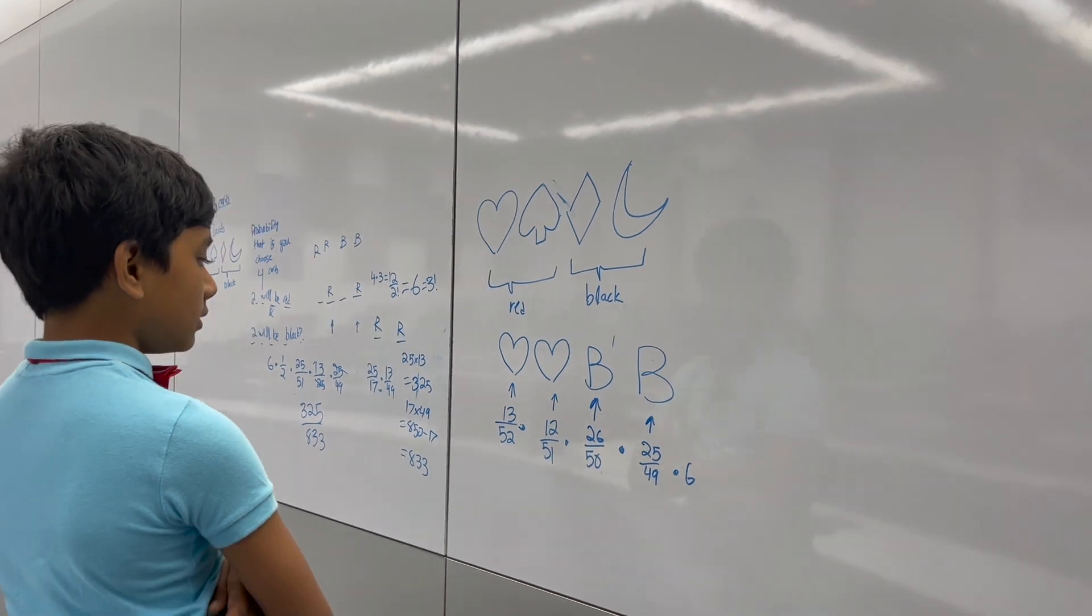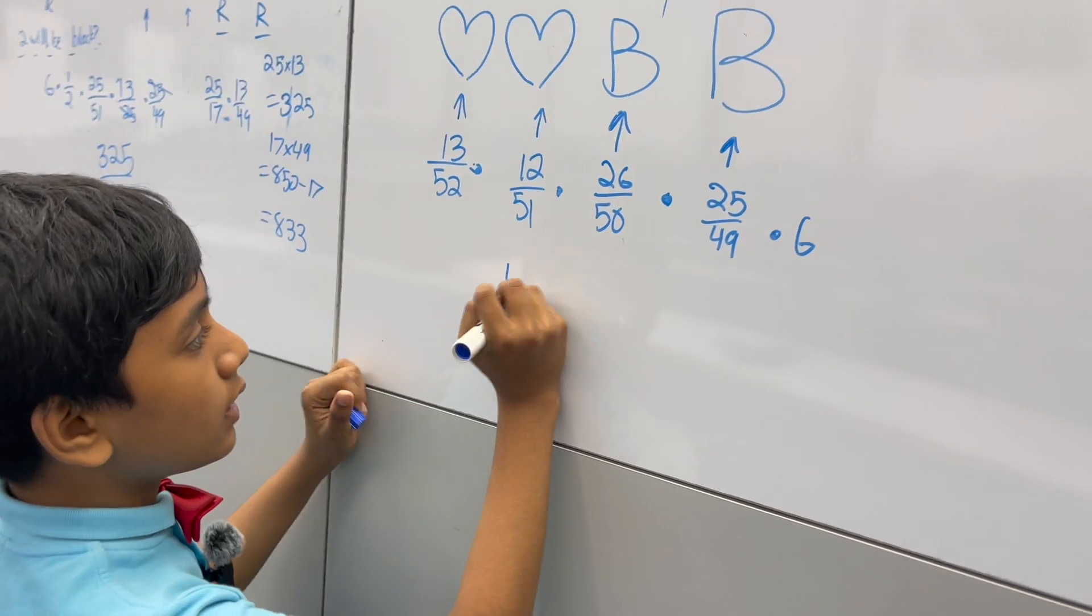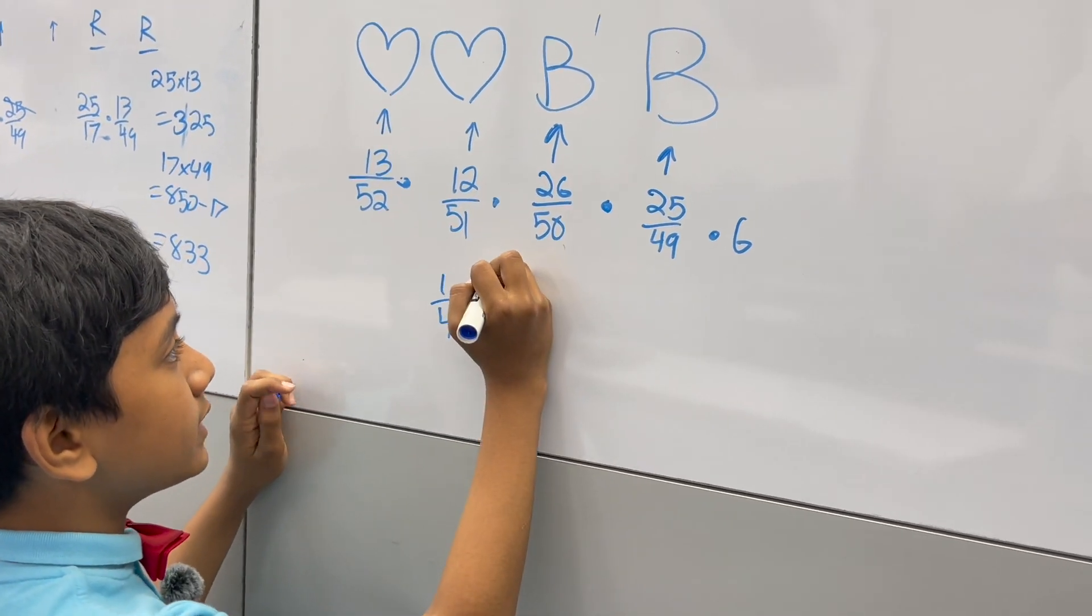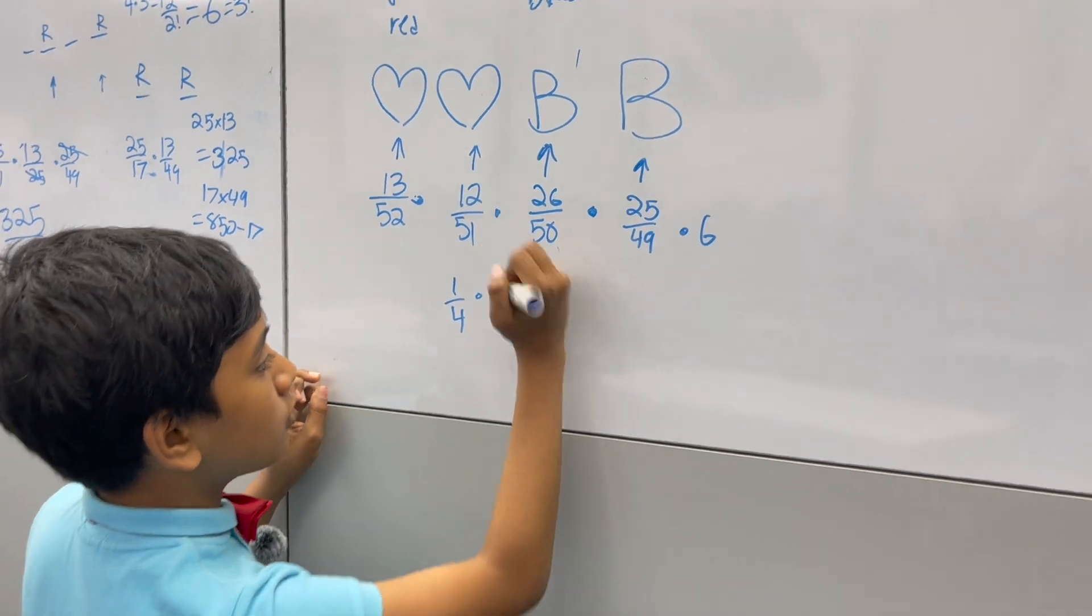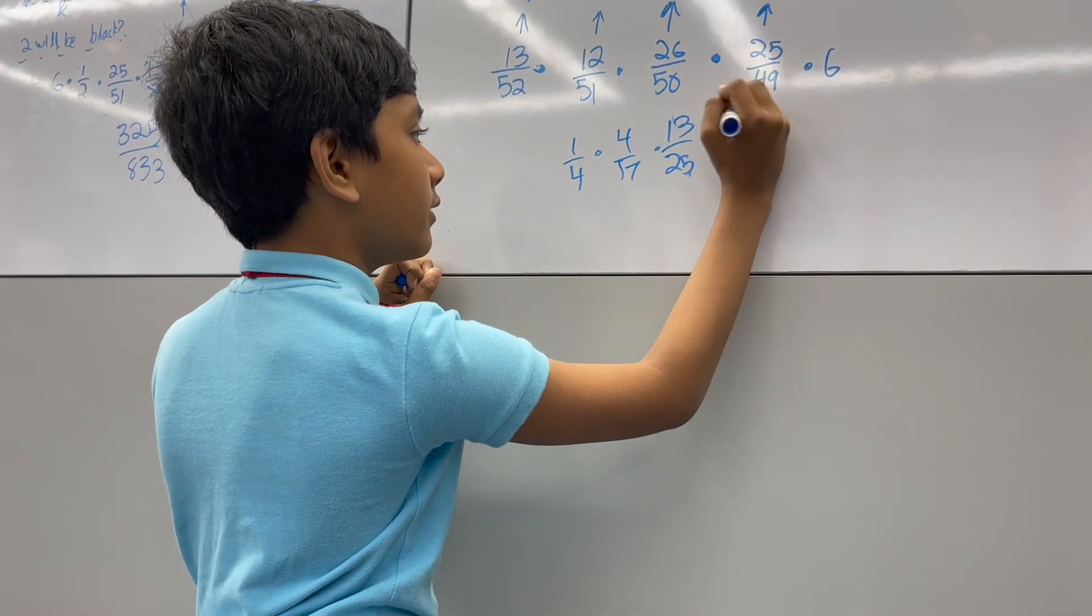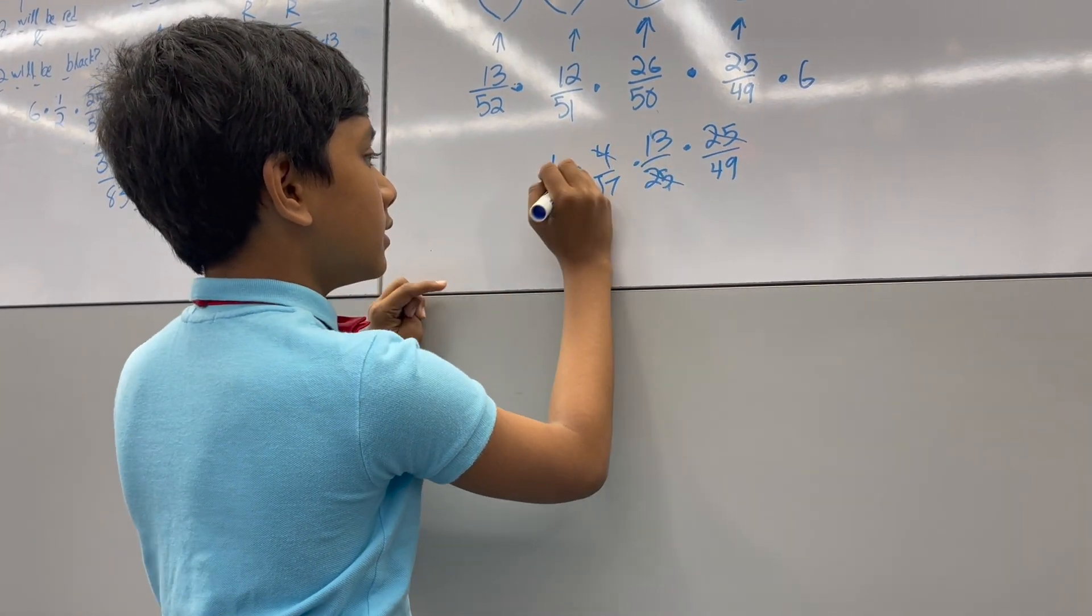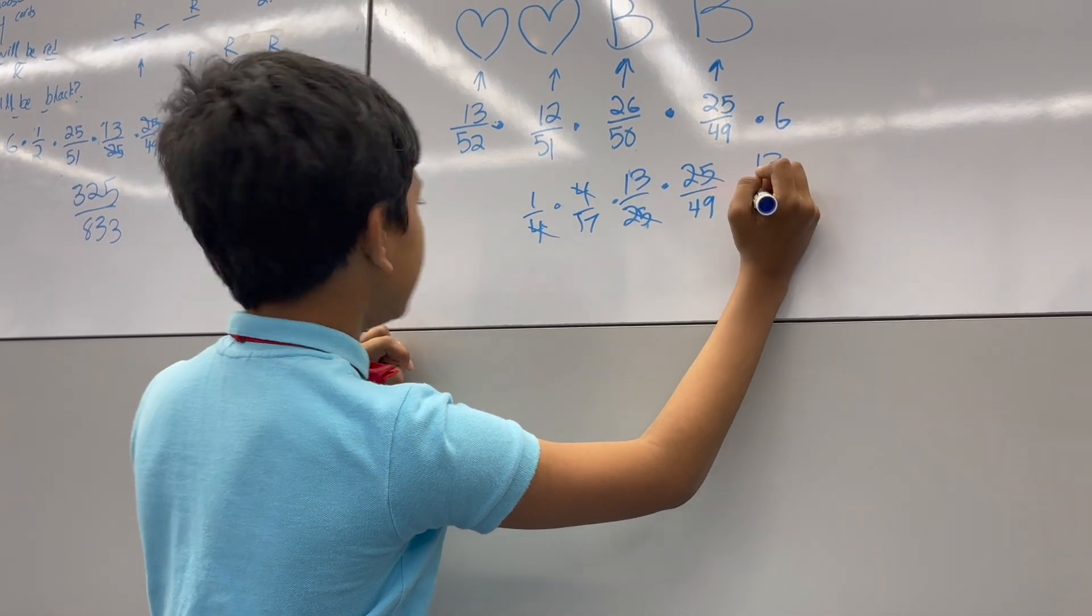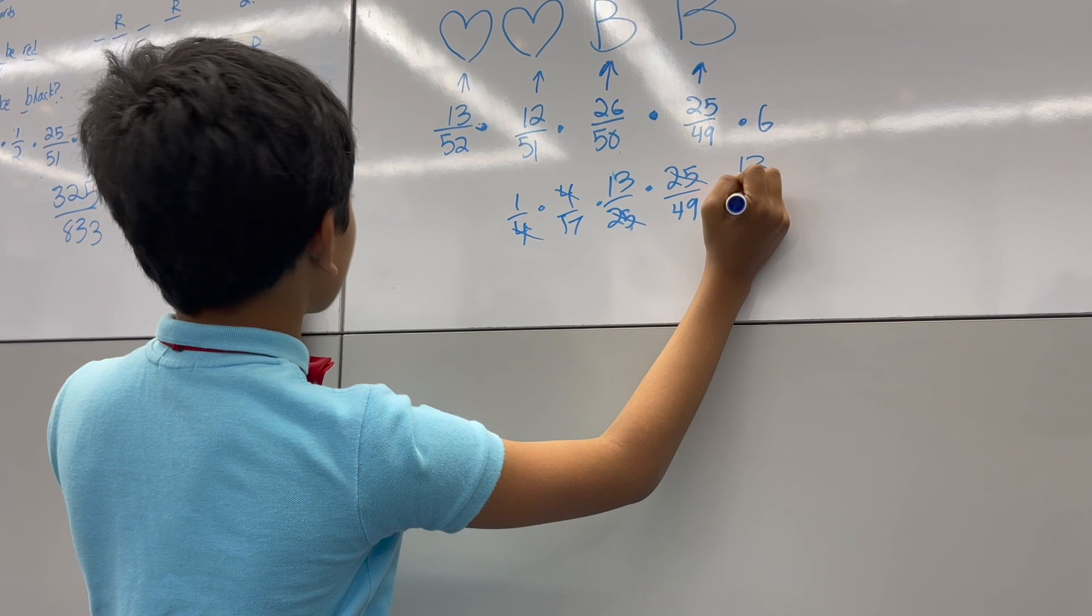So, now we can reduce this. So, 1 fourth times 12 over 51 is the same thing as 4 over 17. Times 26 over 50 is the same thing as 13 over 25. Then, times 25 over 49. Which gives us 13 over 17, times 29. Which should be 833.